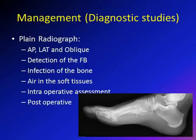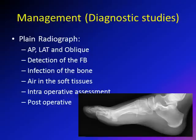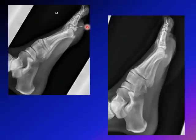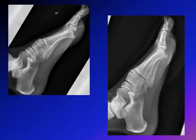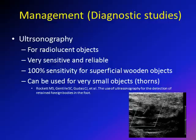For diagnostic imaging, always start with plain radiographs — AP, lateral, and oblique views. X-rays detect most foreign bodies including all metals and large glass pieces, can show bony infection such as periosteal reaction, and reveal air in soft tissues with extensive infection. X-rays are also important intraoperatively to locate foreign bodies and postoperatively to document complete removal, as demonstrated in a case where a needle was successfully removed under OR guidance.